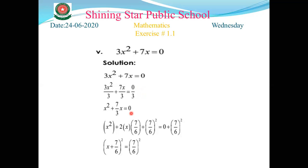The third step: add half of b squared to both sides. b is 7/3. Half of b is 7/6, since we cannot cancel 7 and 2, so we multiply 2 into the denominator: 7/6. We add (7/6)² to both sides.